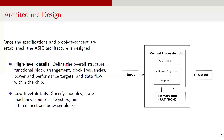Once the specifications and proof of concept are established, the ESIC architecture is designed. We define high-level and low-level architecture design details. High-level design details include defining the overall structure, functional block arrangement, clock frequencies, power and performance targets, and data flow within the chip. For low-level details, we specify modules, state machines, counters, registers, and interconnections between the blocks. ESIC designers evaluate multiple design approaches, balancing performance, feasibility, and hardware resources while ensuring cost efficiency within the budget constraints.